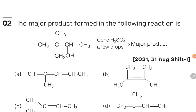The second question of this chapter is: the major product formed in the following reaction is? They have given us an alcohol and we are going to treat this alcohol with concentrated H₂SO₄.